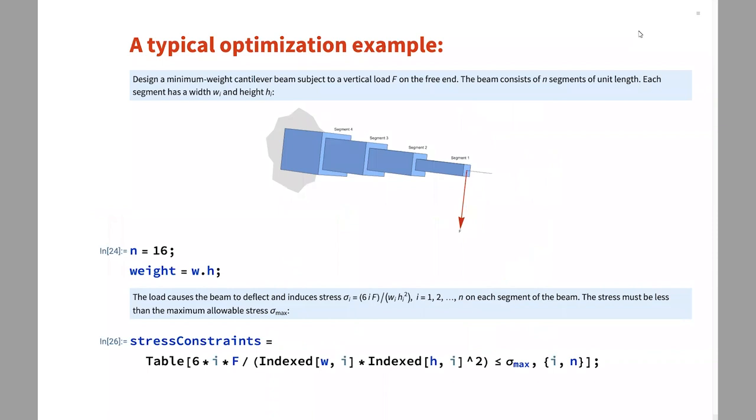The first example I want to start with is we want to design a cantilever beam. We want to minimize the weight of this cantilever beam. And the way this beam is set up is it's made out of a bunch of blocks. Each one is of unit length. This diagram shows four, but I'm going to use 16 blocks.